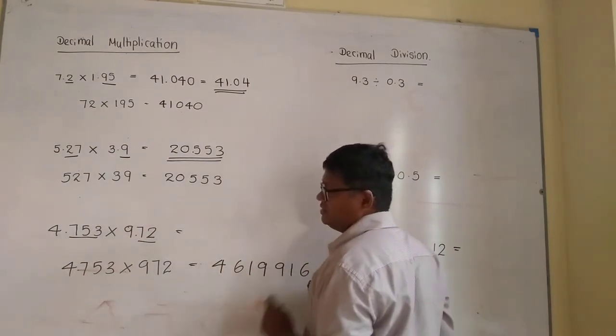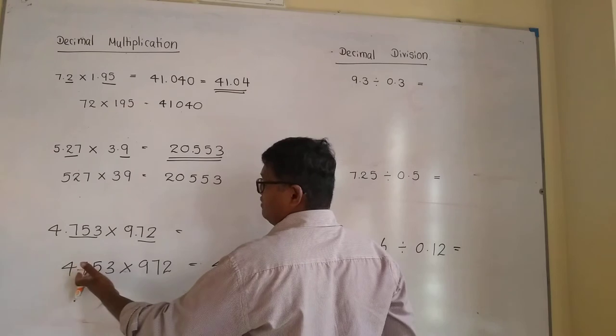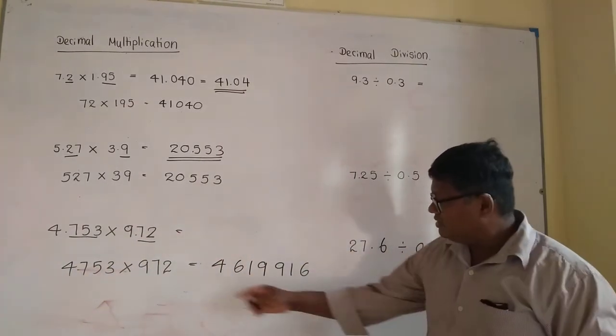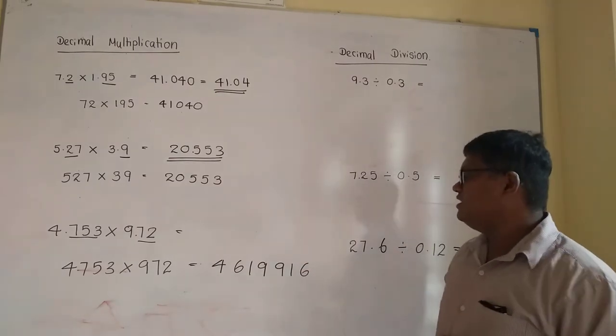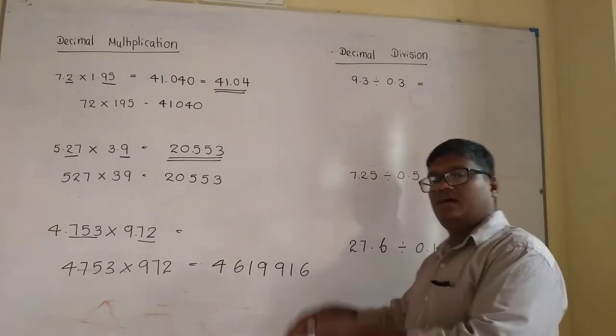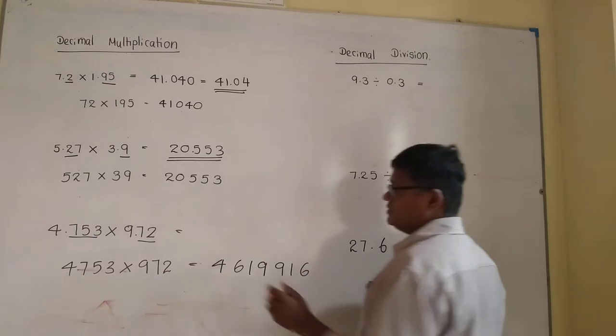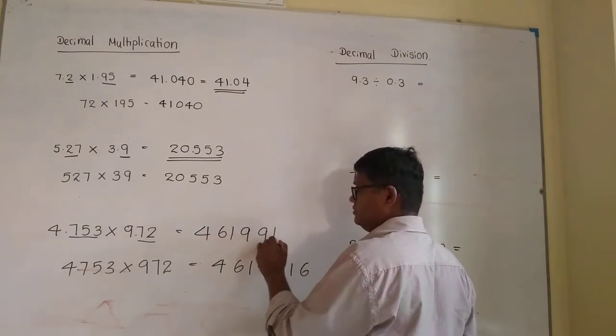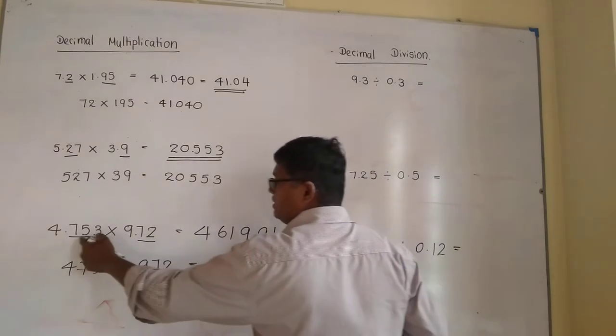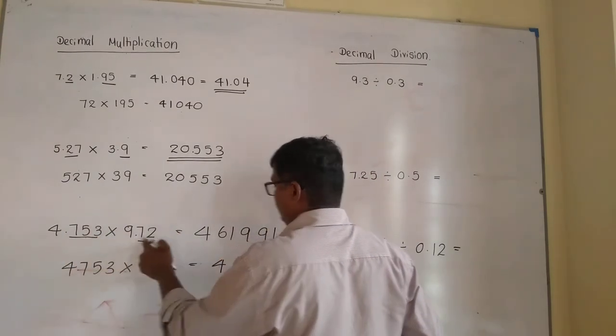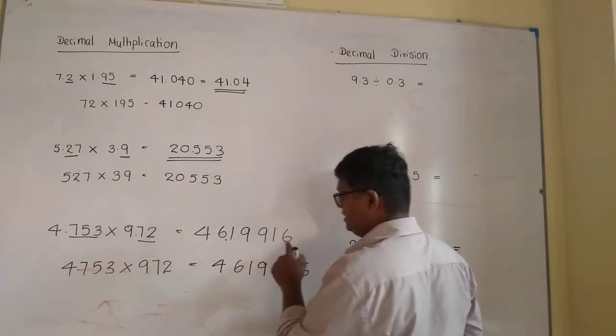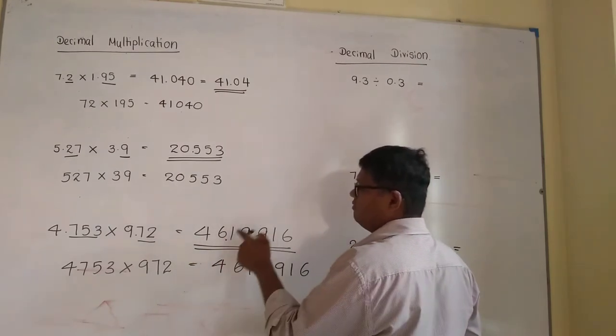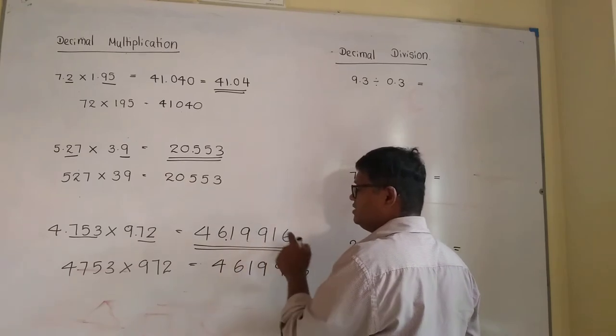Here, two decimal places and three decimal places. 4,753 multiplied by 972. The answer is 4,619,916. Count the decimal places: 1, 2, 3, 4, 5. Leave five decimal places: 1, 2, 3, 4, 5. The answer is 46.19916.